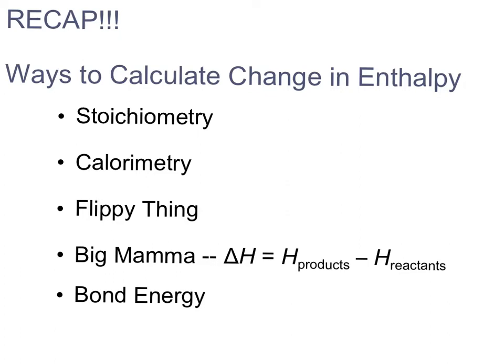In the last video, we discussed the different ways to find enthalpy. To recap, we can use stoichiometry, coffee cup calorimetry, the flippy thing, heat of formation values and Big Mama, and bond energies. So I think we've got enthalpy under our belts, and now we're going to move on to the second thermodynamic term known as entropy.